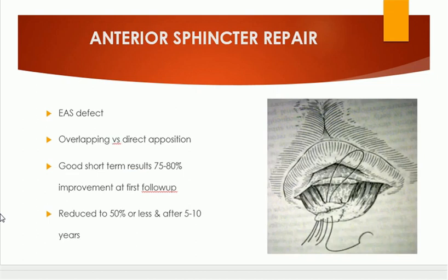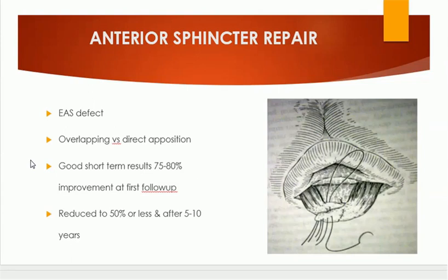Anterior sphincteroplasty is a surgical option where the divided sphincter is repaired. External anal sphincter defects are repaired using either an overlapping technique or direct opposition of the ends of the cut sphincter. This has good short-term results — 75 to 80% improvement at first follow-up. However, with time it is reduced to 50% or less after about 5 to 10 years.